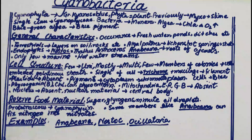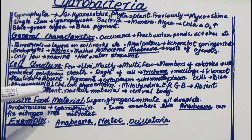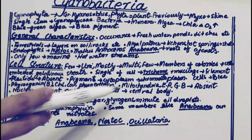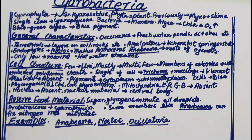Mitochondria, endoplasmic reticulum, and Golgi bodies are all membrane-bound organelles and are absent in cyanobacteria. The nucleus is also absent — they do not have a true nucleus. However, they do have nuclear material (genetic material) in the form of a central body present in the cytoplasm.